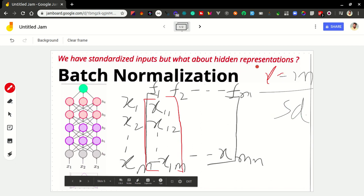So our data distribution looks something like this where we have zero mean and standard deviation. This is how we do it for the input layer.